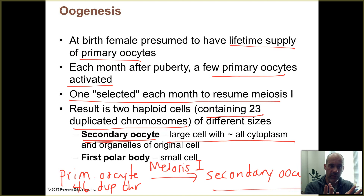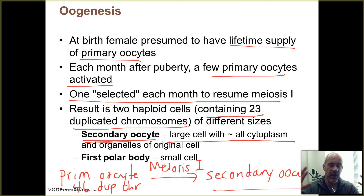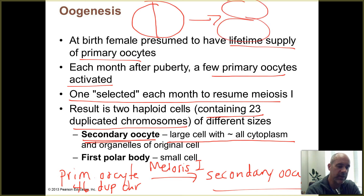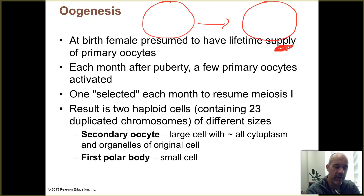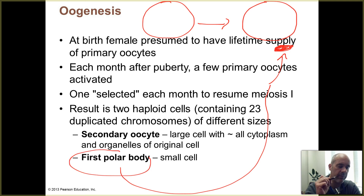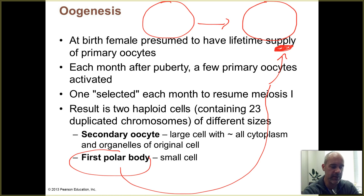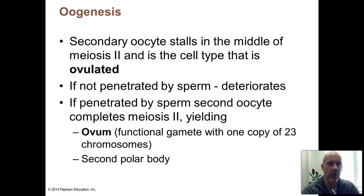The secondary oocyte has the nucleus with 23 duplicated chromosomes and retains almost all of the cytoplasm and organelles of the original cell — it's an unequal division. Instead of two equal cells, you get one cell of about the same size and then a tiny cell called the first polar body, which also has the other set of 23 duplicated chromosomes. The first polar body is not functional; it's essentially a trash can for the extra set of chromosomes — a key difference between oogenesis and spermatogenesis.